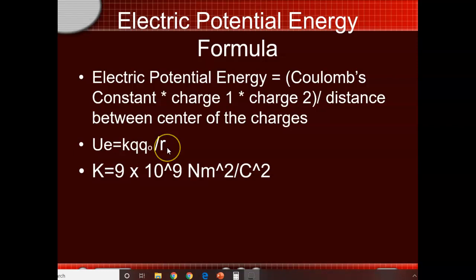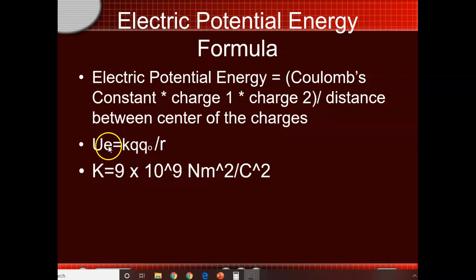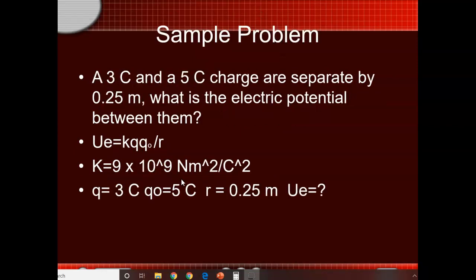Coulomb's constant is again 9 × 10⁹, as we used in the last unit. Here's a sample problem: a 5 coulomb and 3 coulomb charge are separated by 0.25 meters. We're going to figure out the electric potential energy difference between them.